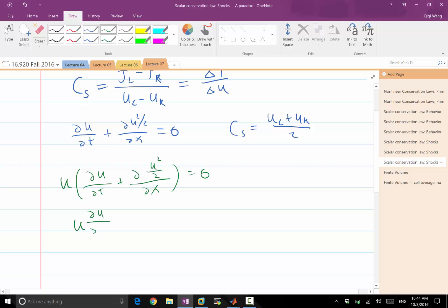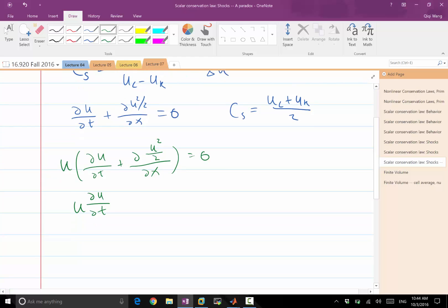First, the time derivative term. There is a classical trick useful in nonlinear stability analysis. When you multiply U with ∂U/∂t, it equals ∂/∂t of U² over 2.